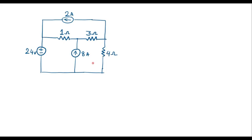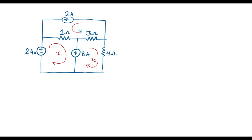We need to use loop analysis method. Here we can observe that this circuit consists of three loops. Let me assume current through this loop is I1, let me assume current through this loop is I2, and let me assume current through this loop is I3.